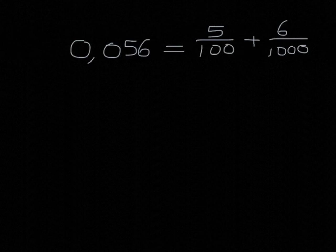How do we add two fractions? Well, we need to find a common denominator. The one denominator is 100, the other one is 1,000, so obviously the common denominator we're going to use is 1,000. To turn 100 into 1,000, we need to multiply by 10.